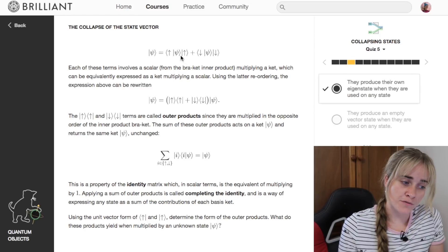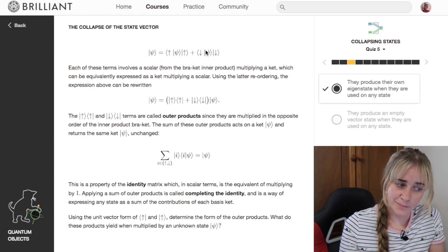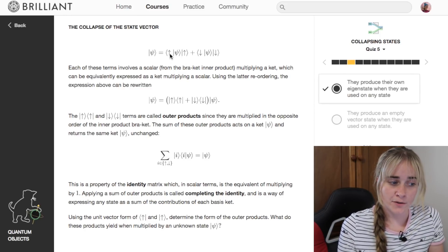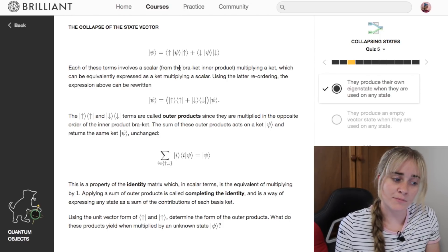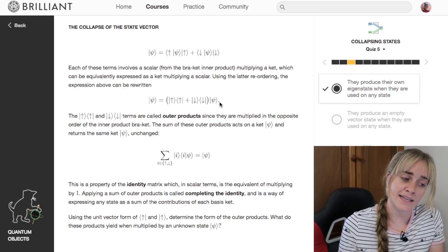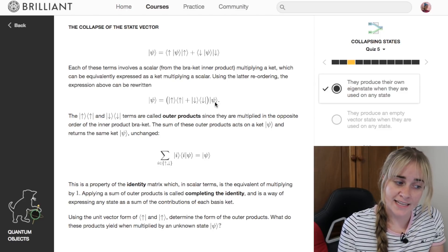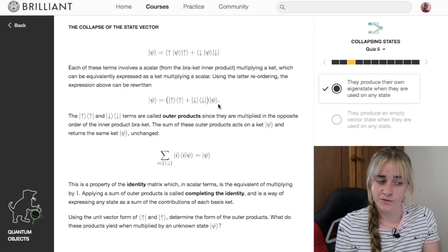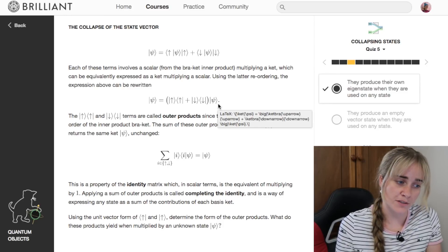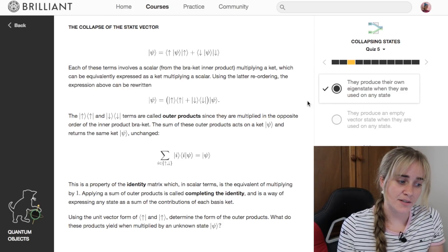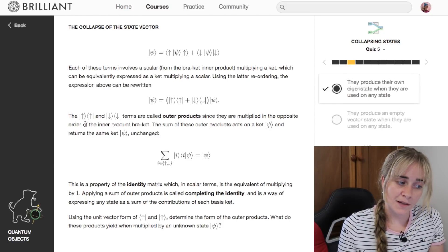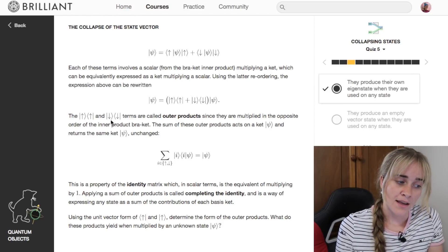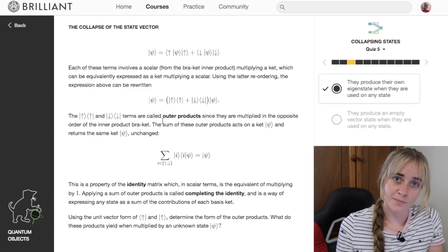We can actually move these inner products behind this state ket, and what we get is this next line down here where they've also taken the unknown state ket out of the brackets because it's common to both terms. This allows us to get a look at these terms in here, and these terms are called outer products.